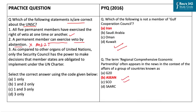Article 27 of the UN Charter requires nine favorable votes including from non-permanent members. If a permanent member votes negatively against a resolution, that resolution will be dropped. The third statement says that compared to other UN organs, only the Security Council has the power to make decisions that member states are obligated to implement under the UN Charter — this is correct, as other UN organs only make recommendations while the Security Council's decisions are binding. The correct answer is option C — statements 1 and 3 are correct only.